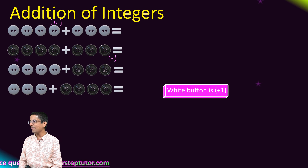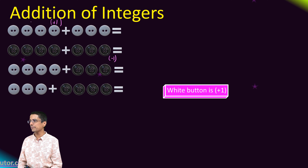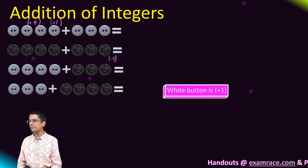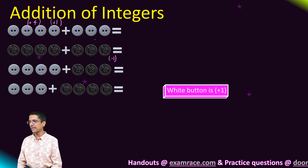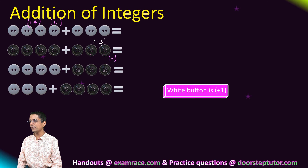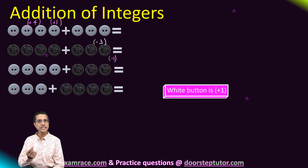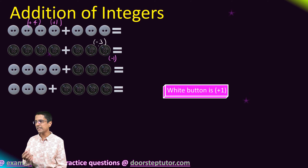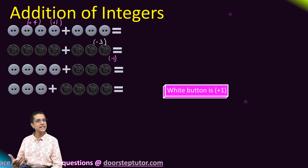So if I have four white buttons, the value is plus four. If I have three black buttons, that denotes a value of minus three — one, two, three — and each one of them is minus one, so we put a negative sign.